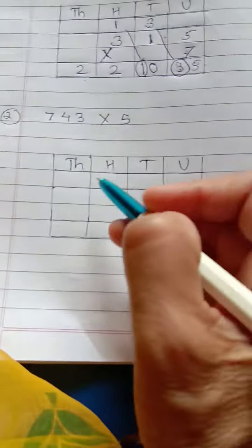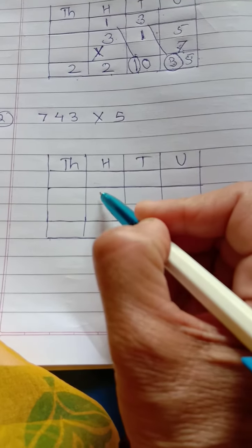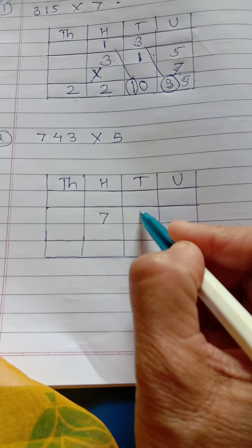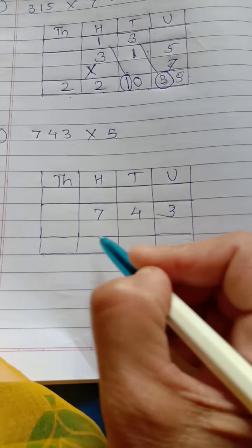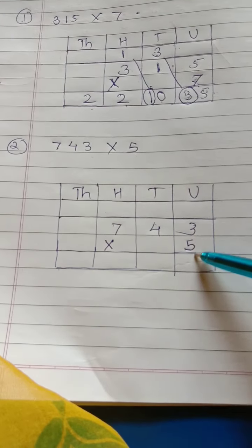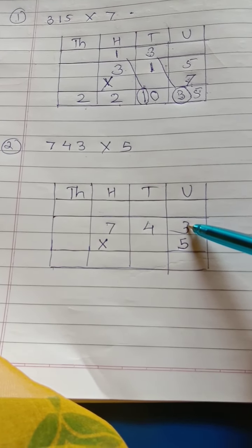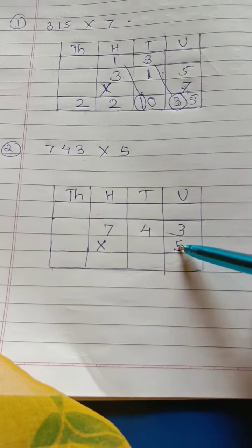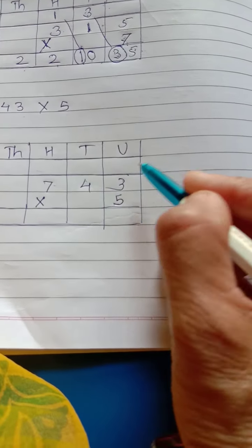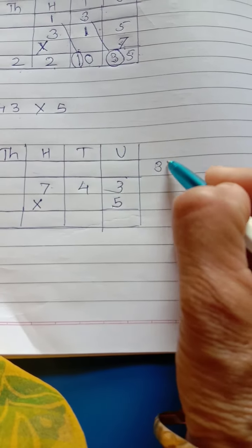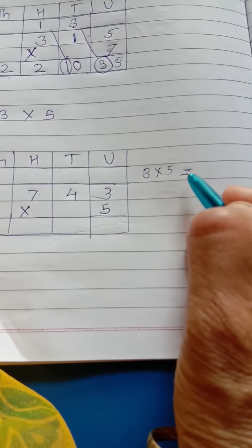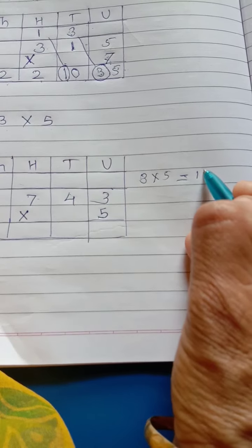Now, solve this one. Easy hai. Like this way. Make the columns like this. 743 multiply 5. 743 multiply by 5. First, multiply these units. 5 multiply 3. Then, 5 multiply 4. Then, 5 multiply 7. So, first this one. 3 multiply by 5. 3 multiply 5, 5. 15.